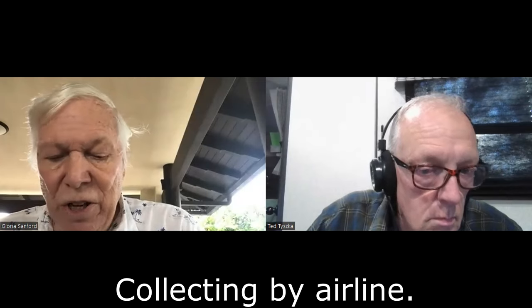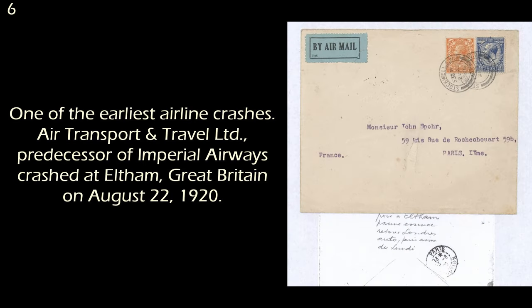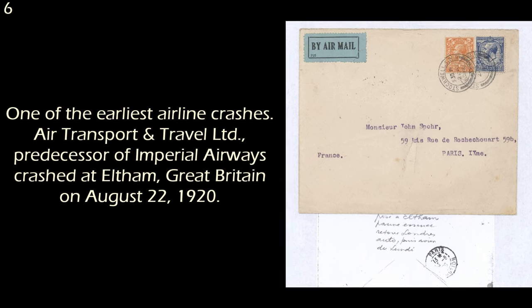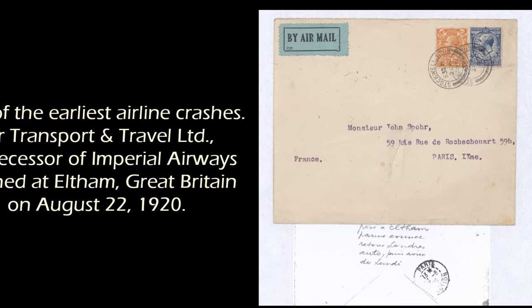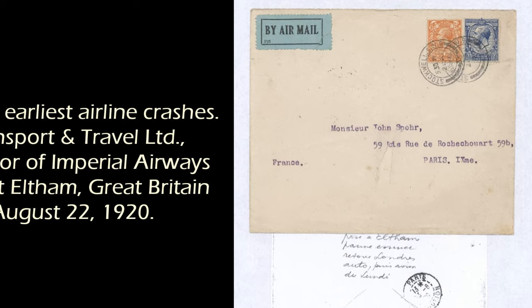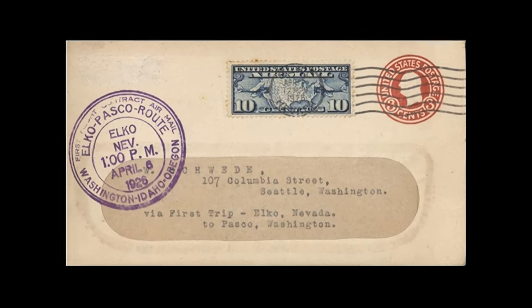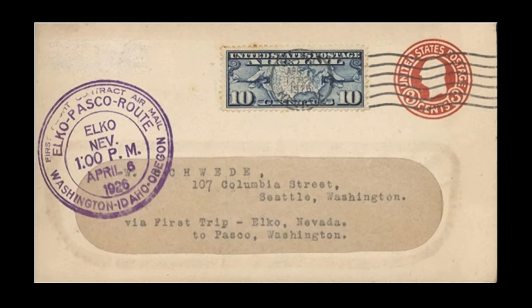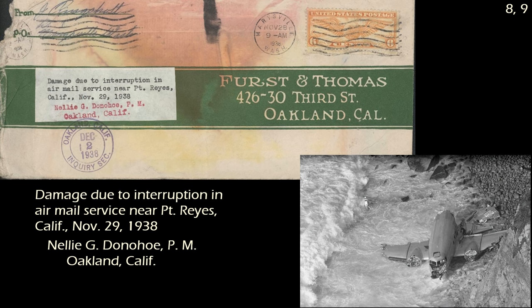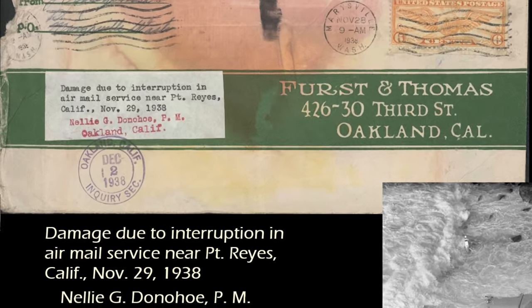One of my covers is from one of the earliest airline crashes — a British airline called Air Transport and Travel, which crashed near Eltham, Great Britain on August 22nd, 1920 — a predecessor of Imperial Airways. The next is from Varney Airlines, one of the early contract airmail operators, which crashed in Jordan Valley, Oregon on April 6, 1926 — Varney was a predecessor of United Airlines. After that is a United Airlines DC-3 that crashed in the ocean just off Point Reyes, California in November 1938, with a photograph taken from another aircraft showing the fuselage washed up onto the beach.